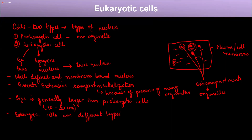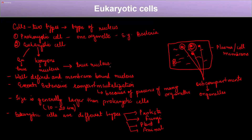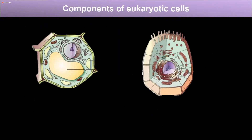The eukaryotic cells range from protista — which you will study in kingdom classification — to fungi, plant, and animal cells. So these are the different kinds of eukaryotic cells. In comparison, prokaryotic cells mainly include bacteria. Now, let's study the different components of two typical eukaryotic cells: the plant cell and the animal cell.